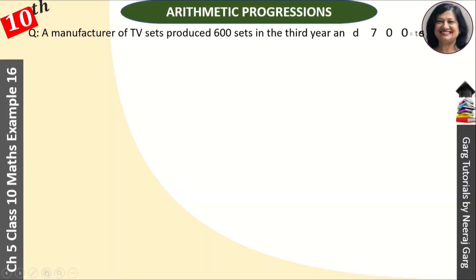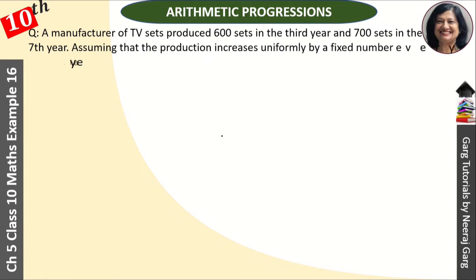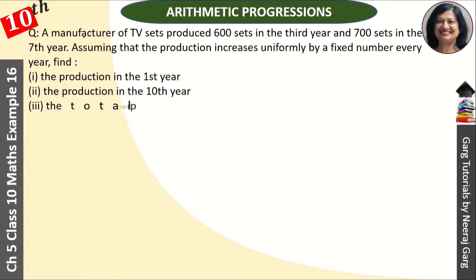Hi, this is Neeraj Garg and you're watching Class 10, Chapter 5 Arithmetic Progression. A manufacturer of TV sets produced 600 sets in the third year and 700 sets in the seventh year.